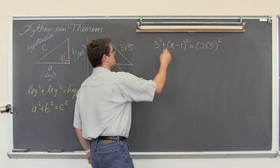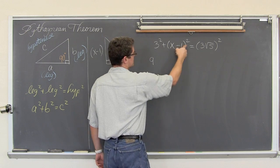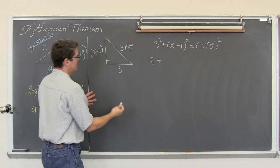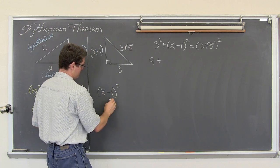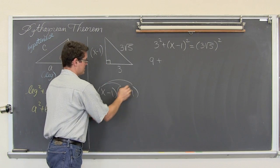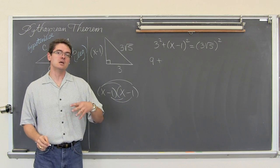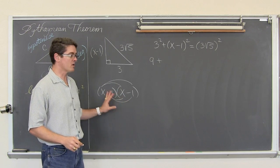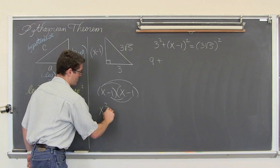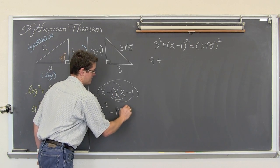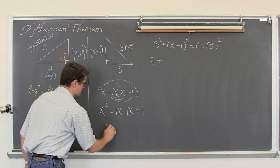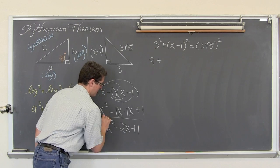So we have 3 squared which is 9. Then we have x-1 squared. Well, x-1 squared is x-1 times x-1. We are going to distribute that together — make sure that you do that, because a lot of students will try and shortcut this process and end up with only two terms when there are supposed to be three. So x times x is x squared, x times negative 1 is negative x, and then another negative x, and then negative 1 times negative 1 is positive 1. So we have x squared minus 2x plus 1.